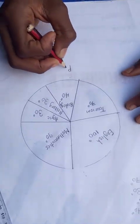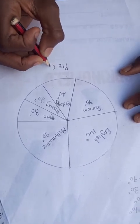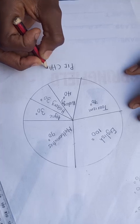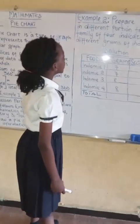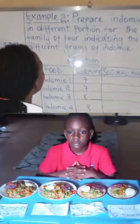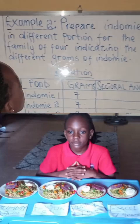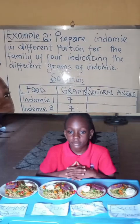So this is a pie chart. Now let's go to example 2. Prepare Indomie in different portions for the family of 4 indicating the different grams of Indomie.